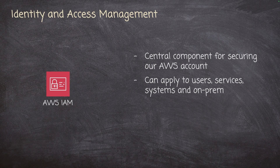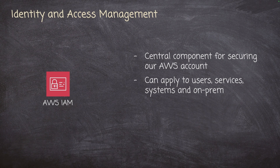We can also apply permissions to systems. For example, if we had an EC2 system up and running, we can apply a role to that EC2 system. Then if we log into that EC2 system, we could do stuff that is allowed by the role applied to that EC2 instance. We can also use IAM on-prem. AWS has come up with something called IAM Anywhere, which allows us to apply IAM policies and rules to on-prem equipment. We can install some software locally and manage access and permissions for those systems using IAM.